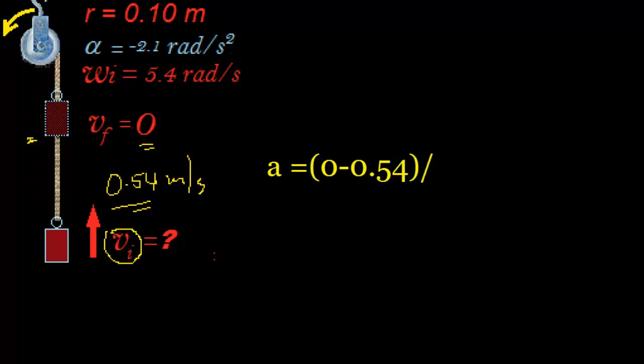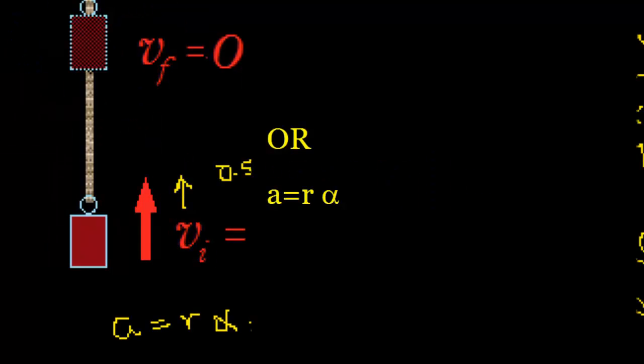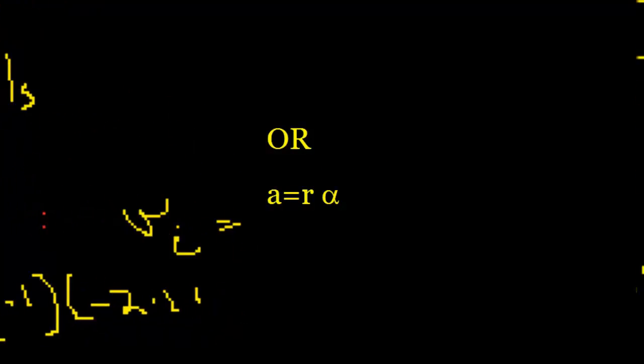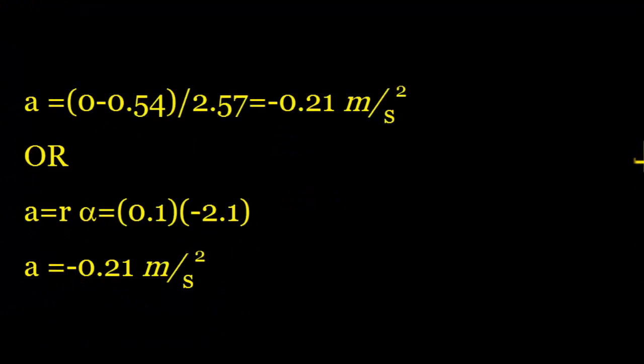which is 2.57 times negative 2.1 radians per second squared. That equals 0.21 meters per second squared. And it's negative because it's slowing down also in the linear direction.